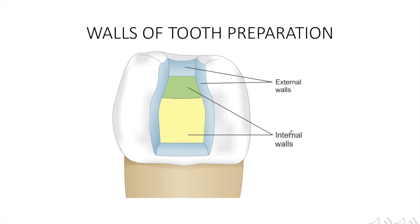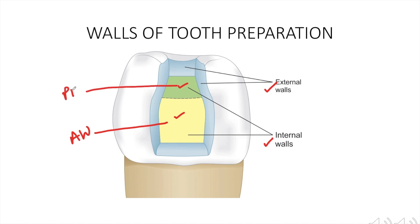Coming to the walls of tooth preparation, the walls can be internal and external walls. As the name implies, the internal wall is a wall of the preparation which is not extended to the external tooth surface. For example, in this picture you can see that the axial wall and the pulpal floor are internal — they are limited to the internal surfaces of the prepared cavity only, not extended to the external tooth surface.